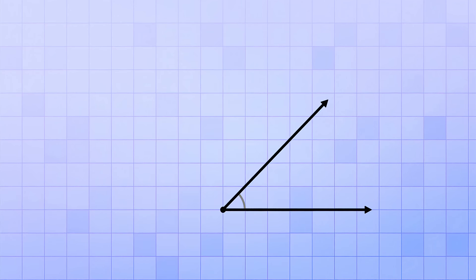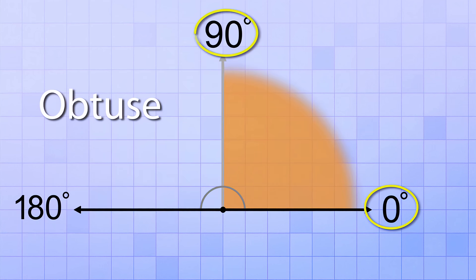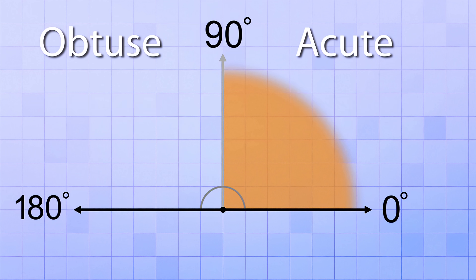Now before we go on, let's quickly review the important angles and regions that we've looked at so far. Our angle measurement is 0 degrees when the rays point in exactly the same direction. It's 90 degrees when they're perpendicular and form a right angle. And it's 180 degrees when they point in opposite directions and form a straight angle. In this region, between 90 and 180, we find obtuse angles. And in this region, between 0 and 90, we find acute angles. One important acute angle is 45 degrees since it's half of a right angle.